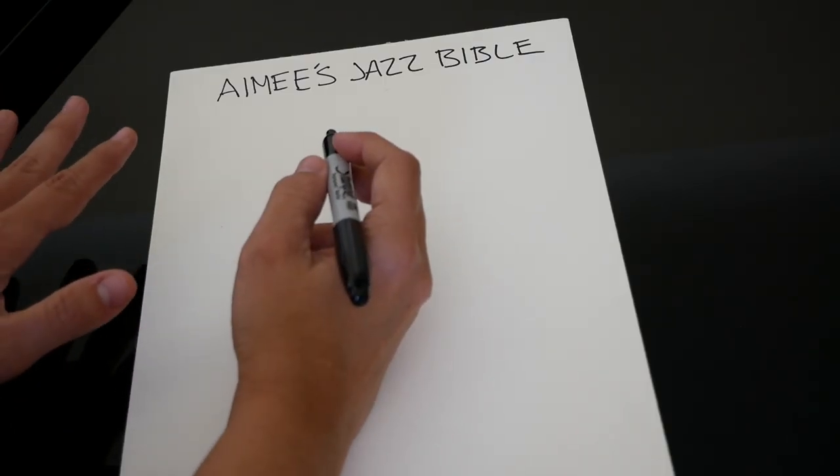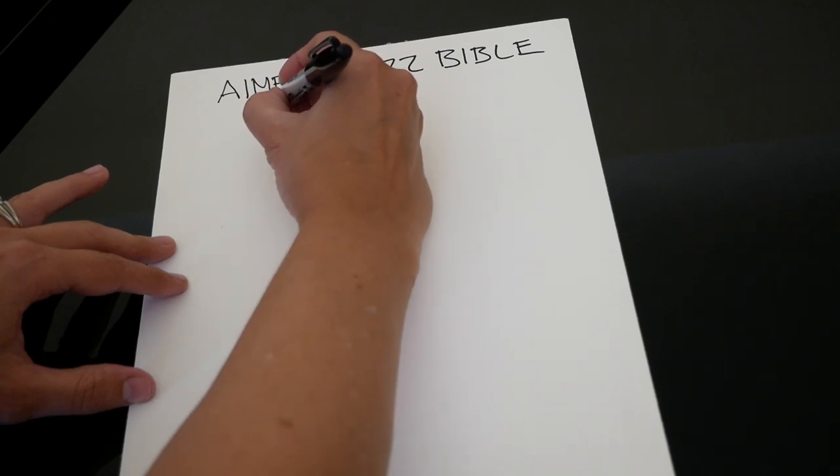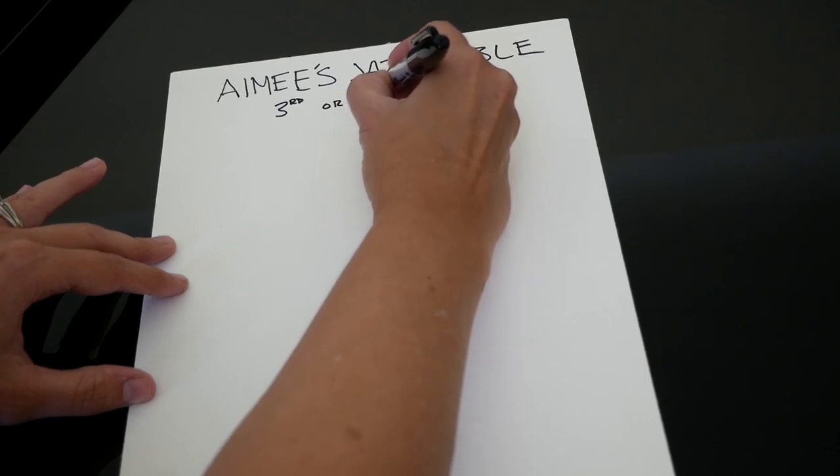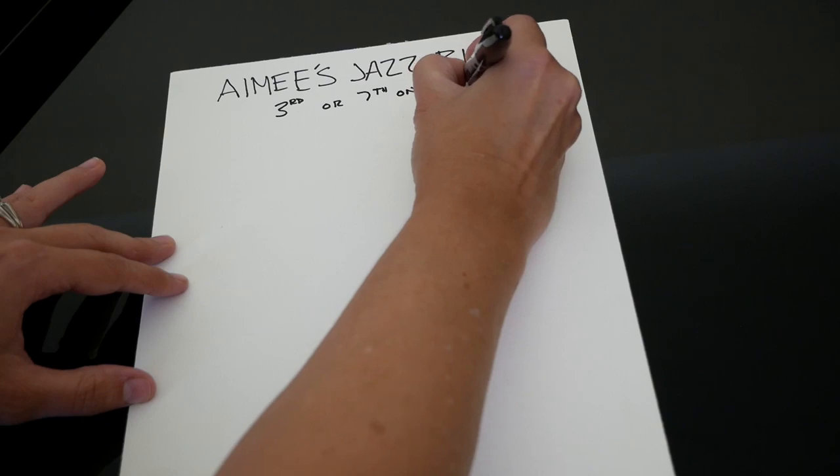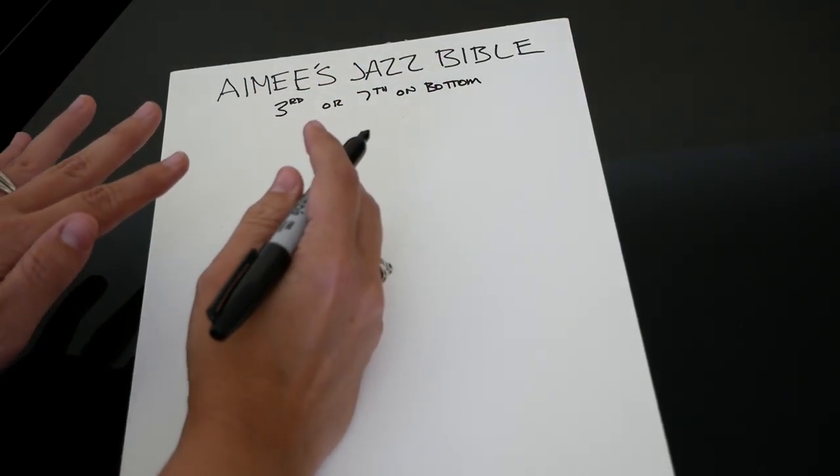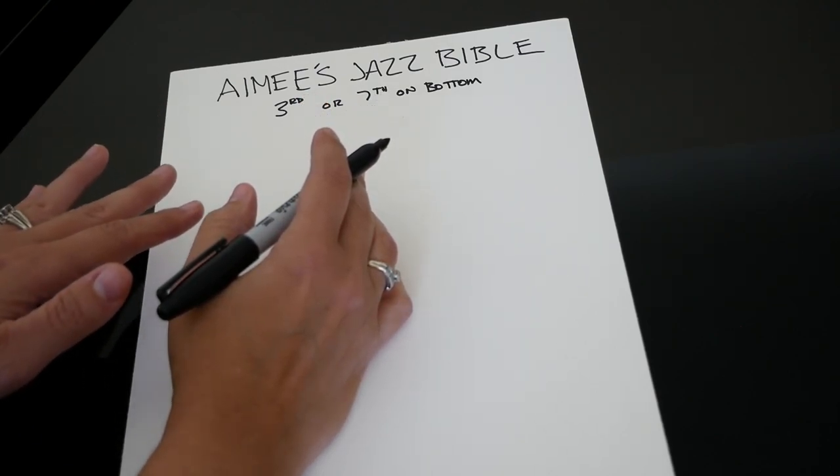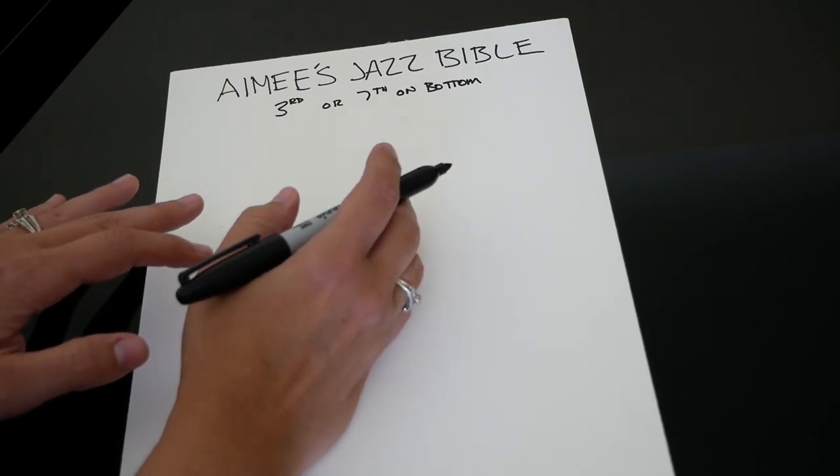The first thing I'm going to do is write this rule at the top: we're always going to put the third or the seventh on the bottom. That's a rule I follow probably 90% of the time, and I'd like you to follow it for a long time until it becomes a habit. Someday you can break that rule, but for now, always the third on the bottom or always the seventh on the bottom.